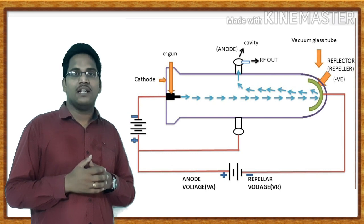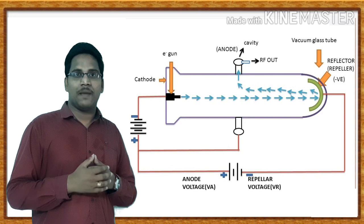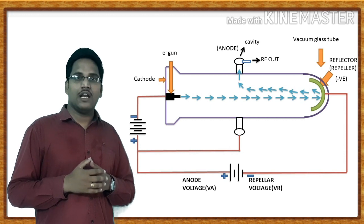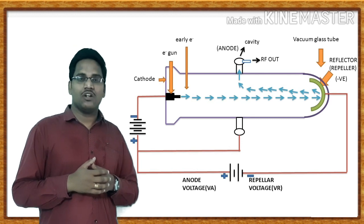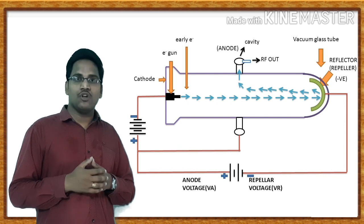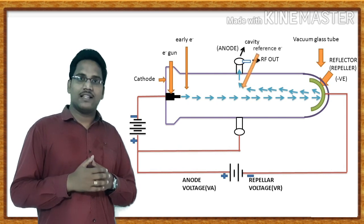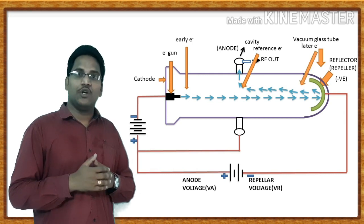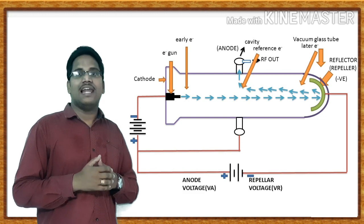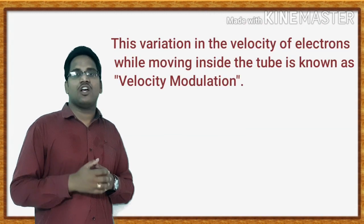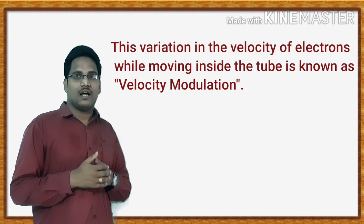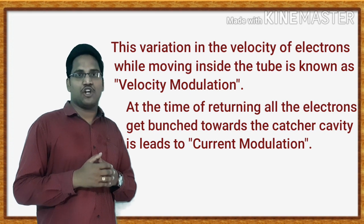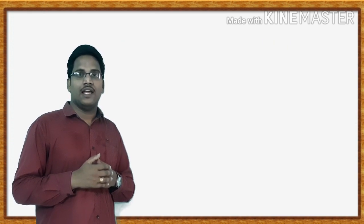For oscillations to be sustained, the time taken by electrons to travel in the repeller space and back to the gap is called the transit time. When the externally applied potential is very high, the electron gun emits electrons with very high velocity — these are called early electrons. When the externally applied potential is almost zero, the electrons move with uniform velocity — these are called reference electrons. The reference electrons experience very low velocity due to the negative potential and are called late electrons. This variation in velocity is known as velocity modulation, and at the time of returning, all electrons get bunched towards the catcher cavity, leading to current modulation. Now let us see the Applegate diagram of the Reflex Klystron oscillator.